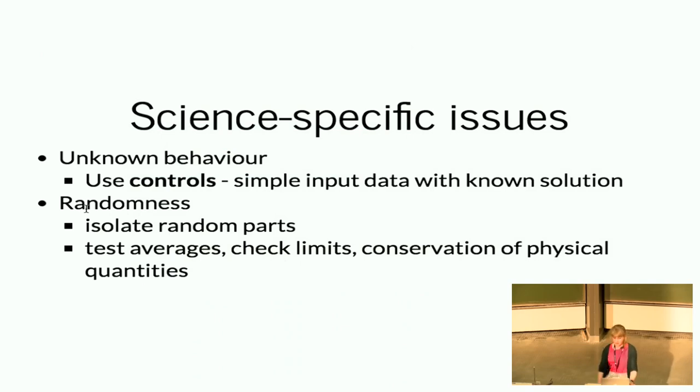So you often have random stuff to deal with. So if you're measuring data and you'll get randomness, you might have randomness just from floating point errors. And this makes your code particularly hard to test because you have no, your output's always going to change. And that's not necessarily a wrong thing. So ways that we can get around this is we can isolate the random parts. So use unit tests to check that everything else works. Also, we can test averages. We can check limits. In physics, you often have physical quantities. So you'll have things like energy will be conserved and momentum will be conserved. And these are all things that we can test.